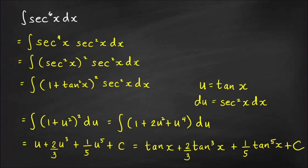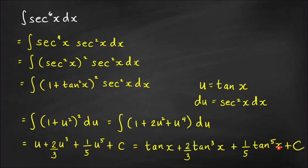Letting u = tan x gives du = sec²x dx. The integral becomes ∫(1+u²)² du = ∫(1 + 2u² + u⁴) du. Applying the power rule term by term: u + (2/3)u³ + (1/5)u⁵ + C. Writing back in terms of x: tan x + (2/3)tan³x + (1/5)tan⁵x + C.